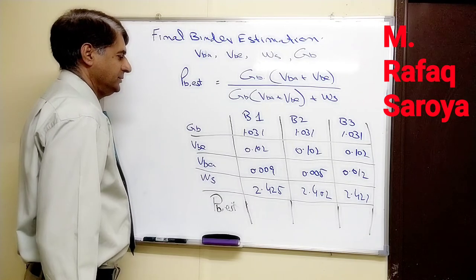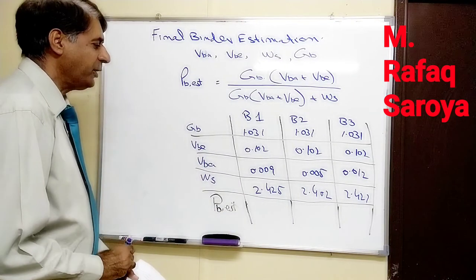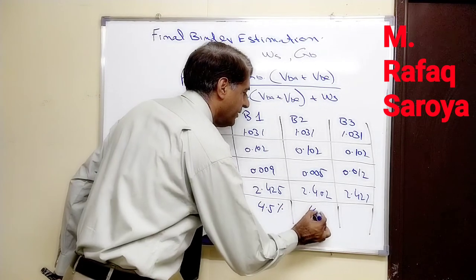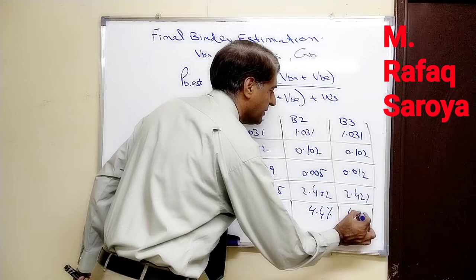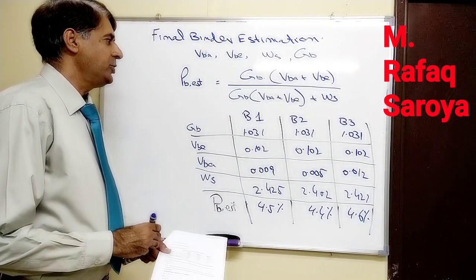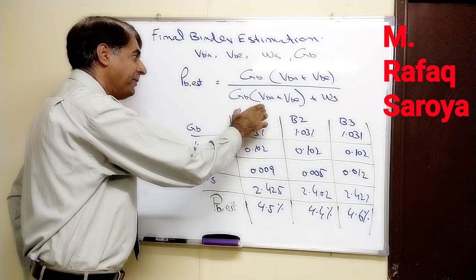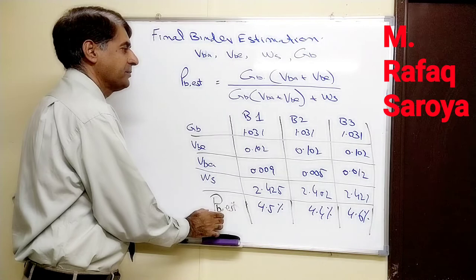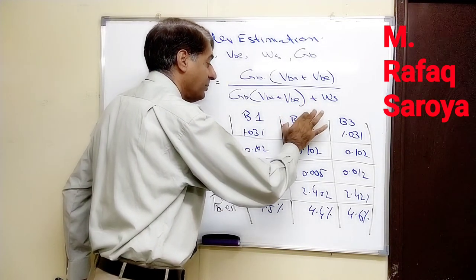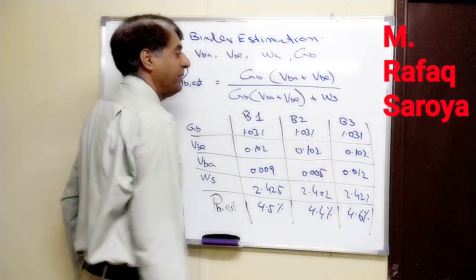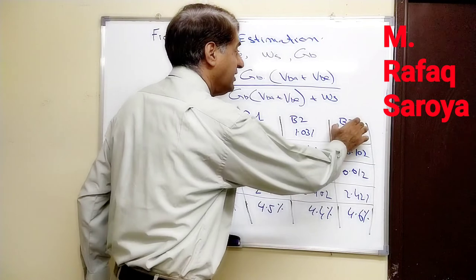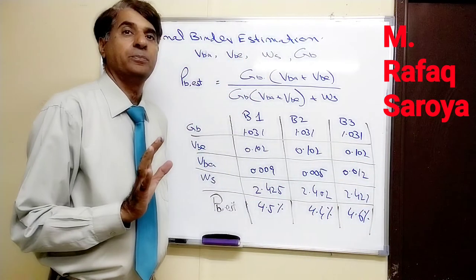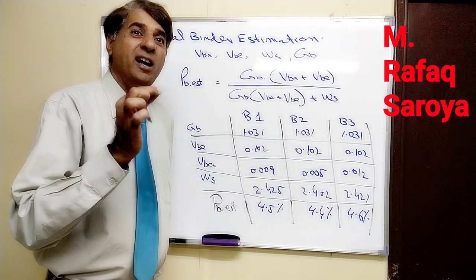When these values are put, we are going to get 4.5%, 4.4%, and 4.6%. So for blend one or design aggregate structure number one, when I have to develop the mix design, I will use 4.5% of this binder. For blend two I will use 4.4% of the binder. And for blend three, when I have to develop the mix design, I will use 4.6% of the binder.